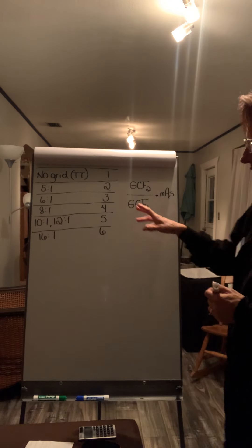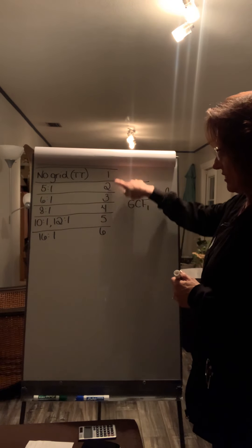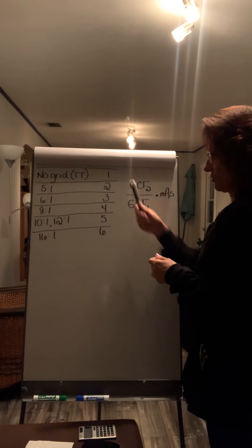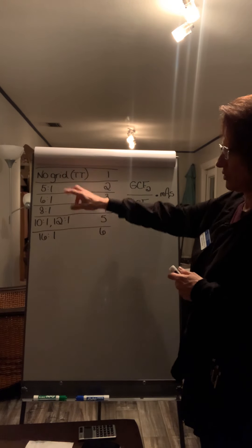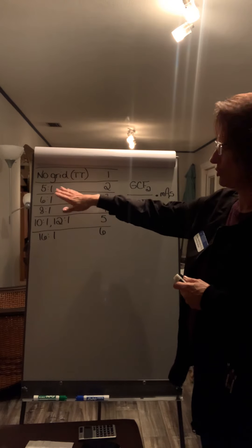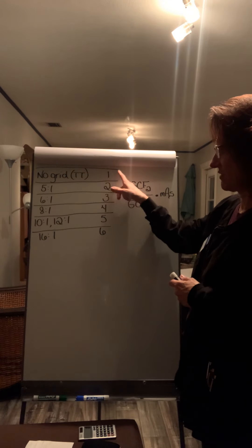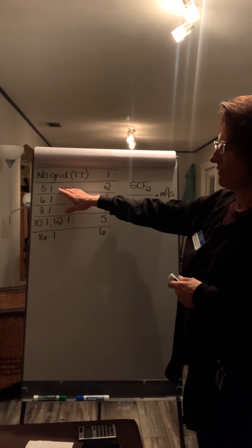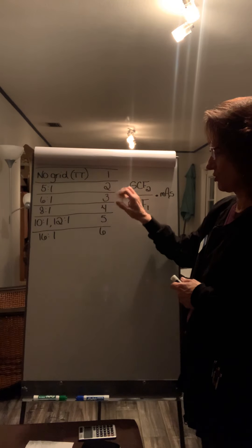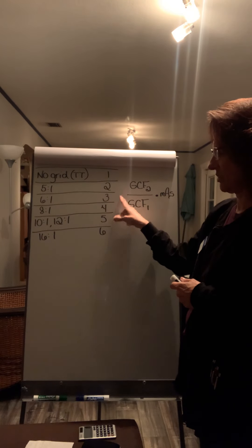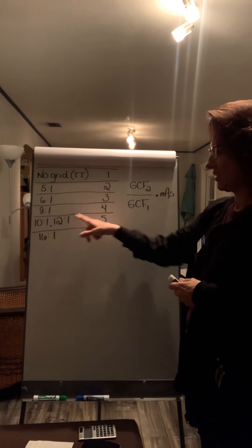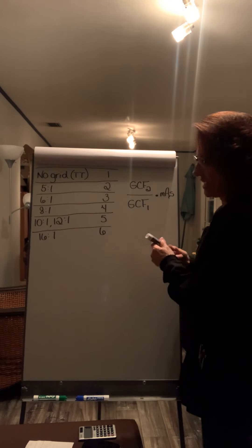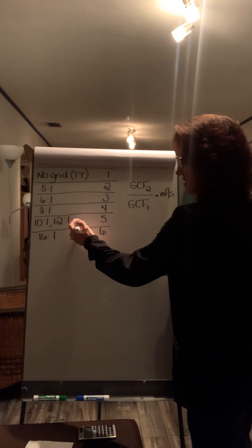So when we look at these conversion factors, these are our grid conversion factors: one, two, three, four, five, and six. These are our grid ratios. So we go from no grid, which would mean you're doing it tabletop. That gets a value of 1. A 5 to 1 grid ratio is a 2. 6 to 1 is a 3. 8 to 1 is a 4. 10 and 12 to 1 gets a 5. And 16 to 1 is a 6.